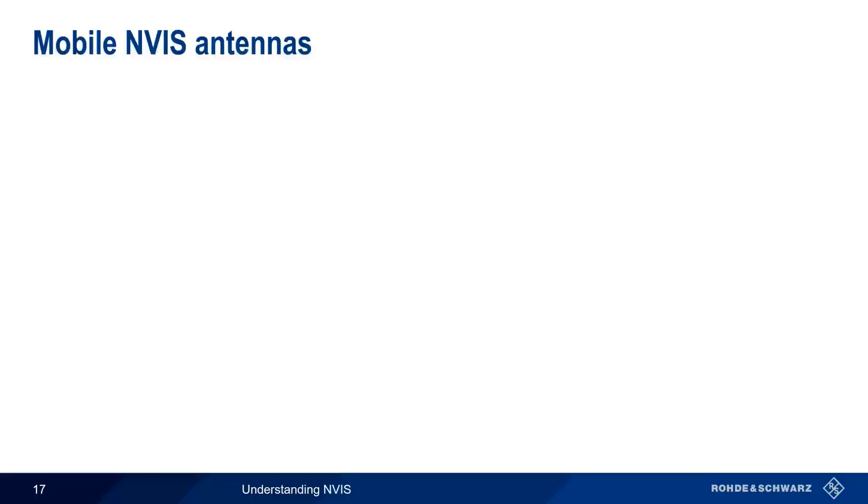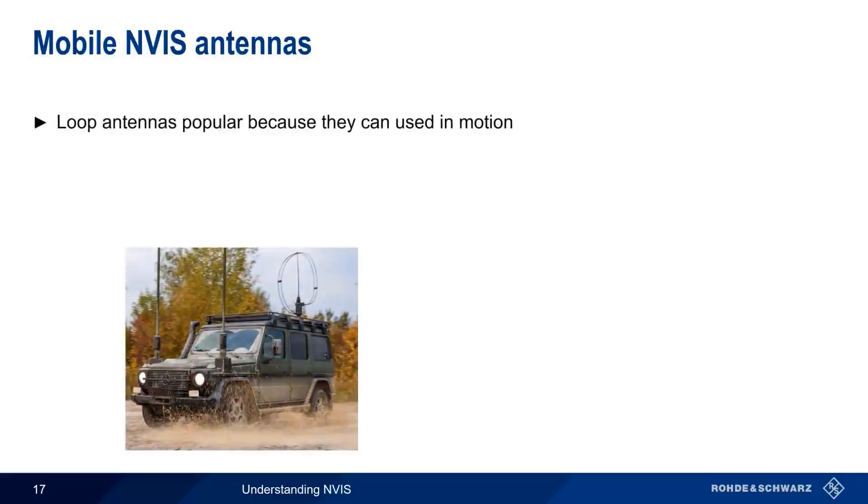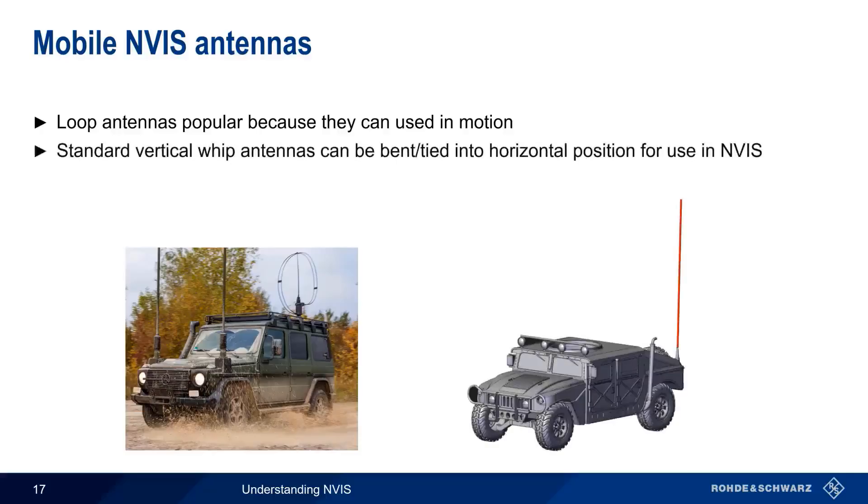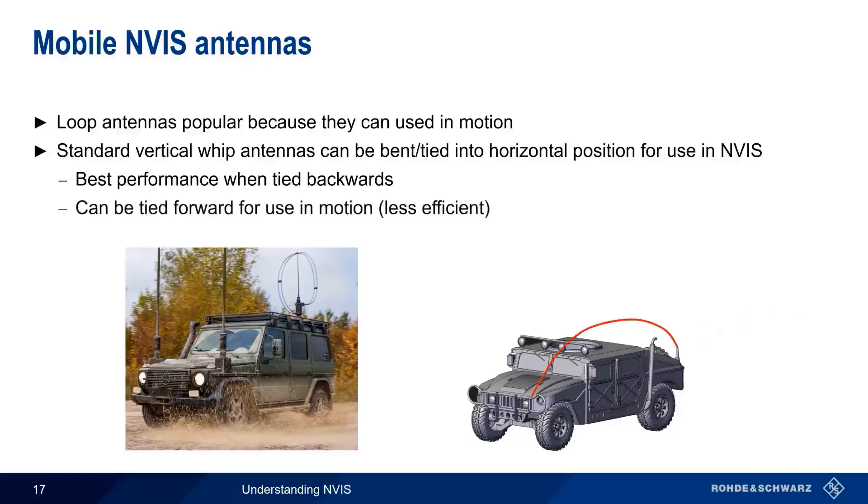NVIS antennas can and often are deployed on vehicles. Loops are a popular choice for vehicle-mounted NVIS antennas because they allow the use of NVIS even when the vehicle is in motion. The standard vertical whip antenna found on many vehicles is a poor choice for NVIS due to the nature of its radiation pattern, but this type of antenna can often be bent or tied into a horizontal position for use as a NVIS antenna. In this configuration, the best performance is usually achieved by tying the antenna backwards, that is, away from the vehicle. Bending the mast backwards has the advantage of reducing out-of-phase currents generated in the bodywork of the vehicle, but this also usually forces the vehicle to be stationary. The whip can be tied or fastened to the forward position, that is, over the vehicle, in order to allow the antenna to be used in motion, although at the cost of lowered efficiency and a less optimal radiation pattern. Generally speaking, a proper dedicated loop antenna is a better choice than an improvised loop antenna made by bending a whip in either direction.